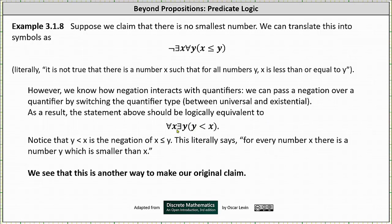The statement for every x there exists a y such that y is less than x is logically equivalent to the original statement of there does not exist an x for every y such that x is less than or equal to y. We see this as another way to make the original claim.